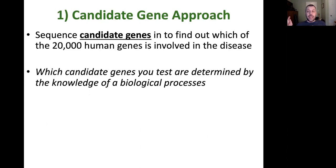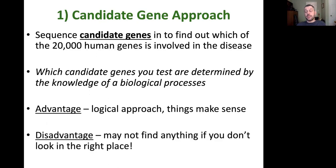The candidate gene approach is sort of exactly what it sounds like. The idea is that before you look for any DNA sequence that might be associated with a disease state, you think about where you want to look. You have to have some biological process that you know a little bit about, pick some genes you think might be involved in that process, and then look for DNA sequence associated with people who have a given disease. This is powerful because any results you get make sense — but the disadvantage is you have to pick candidate genes to sequence, and if you don't find anything, you just didn't look in the right place.